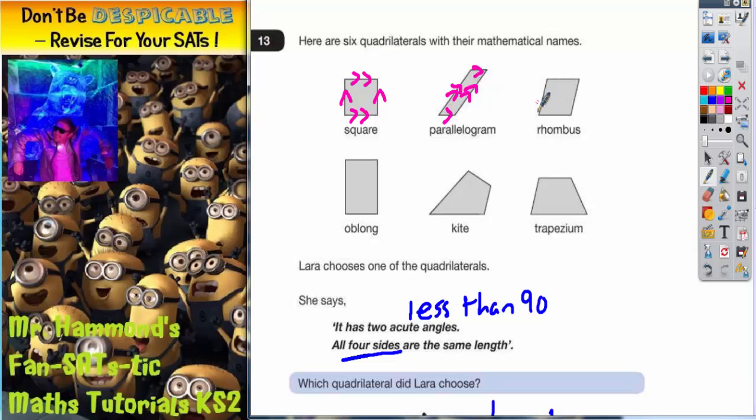Same with the rhombus. Left and right parallel. Top and bottom are a different pair of parallel sides. Same with the rectangle.